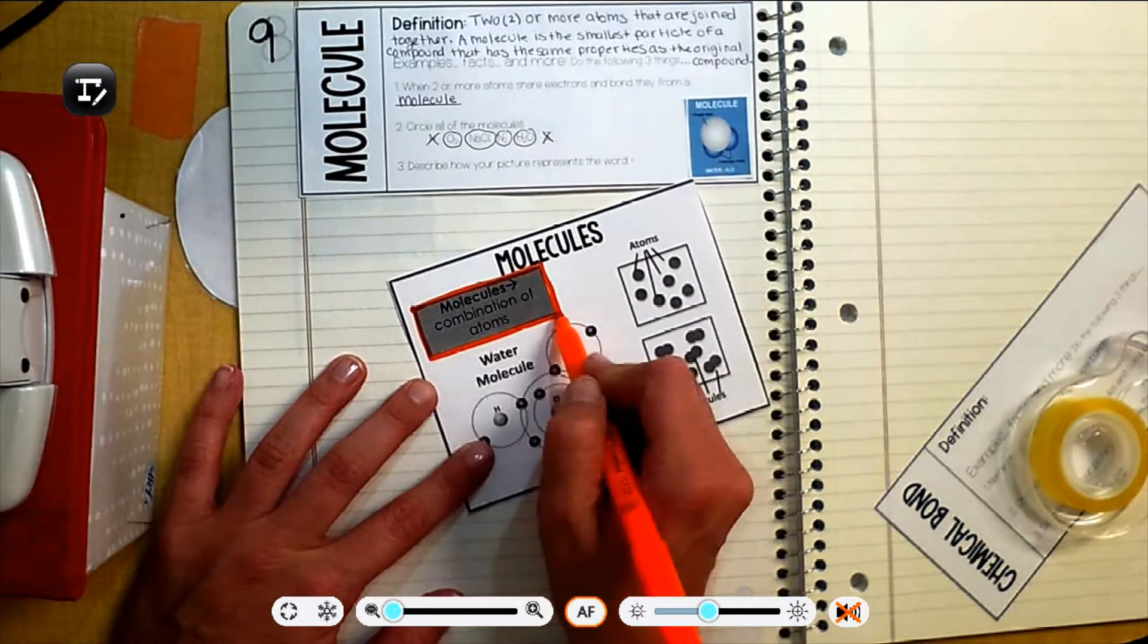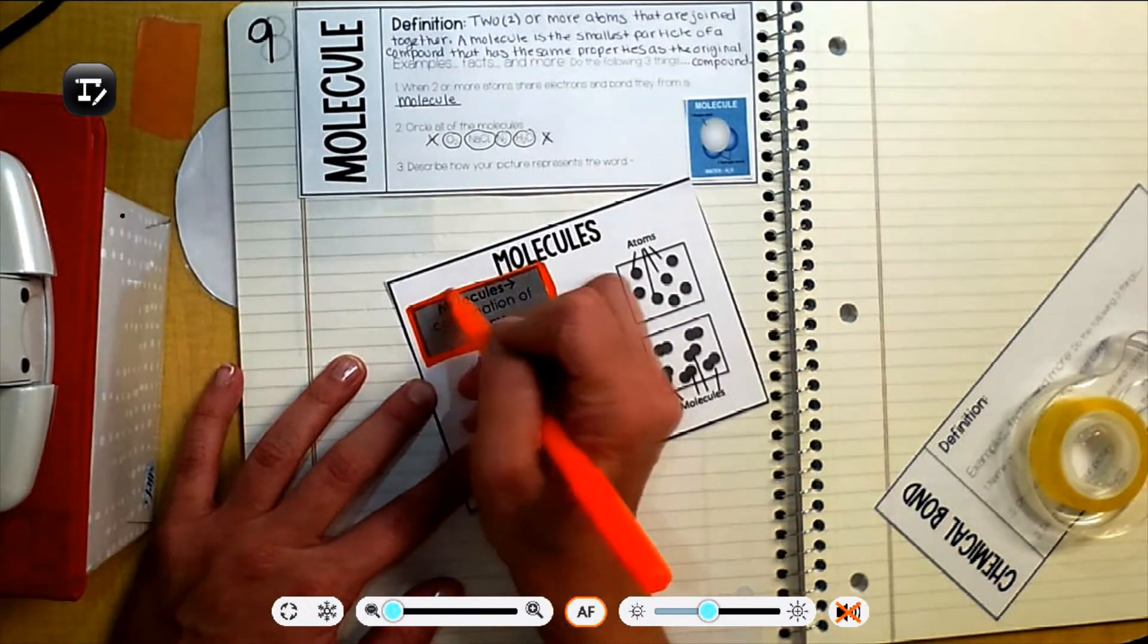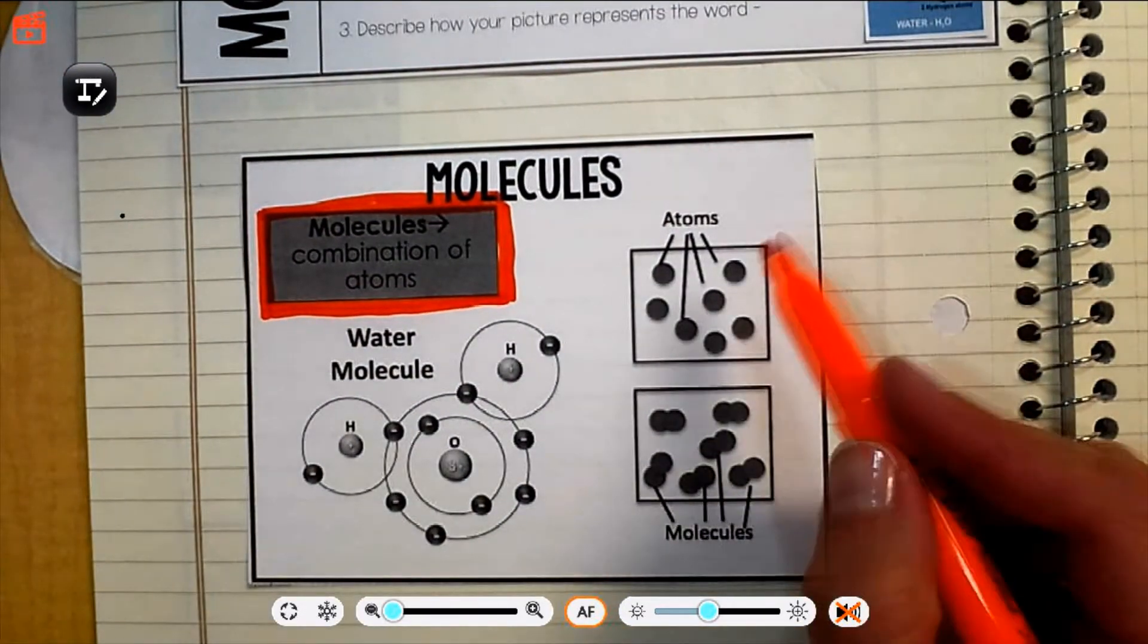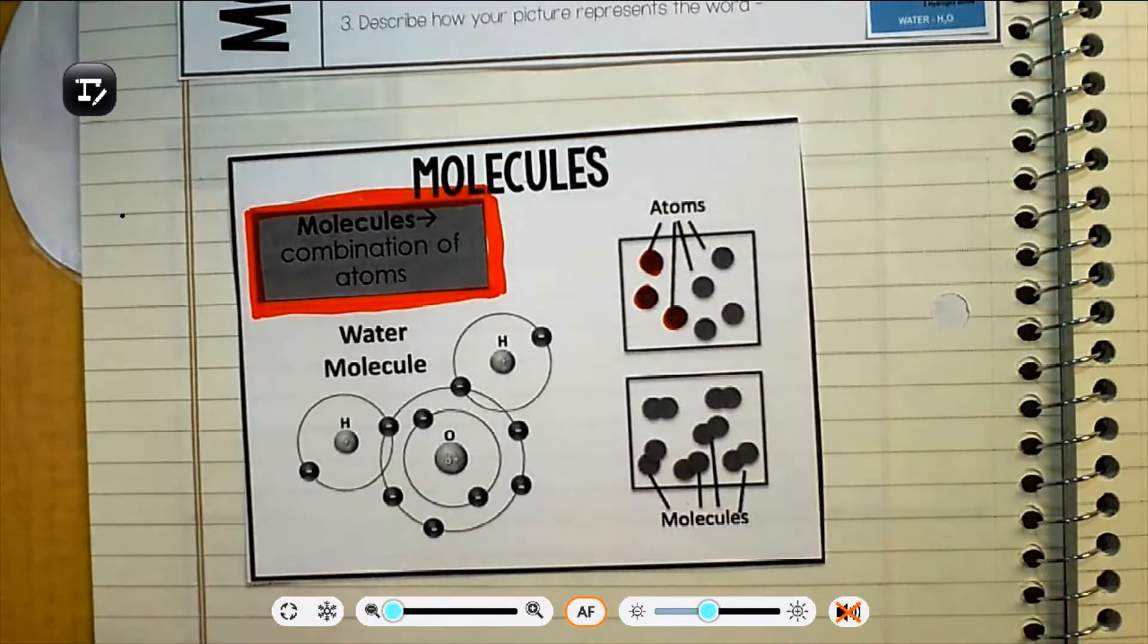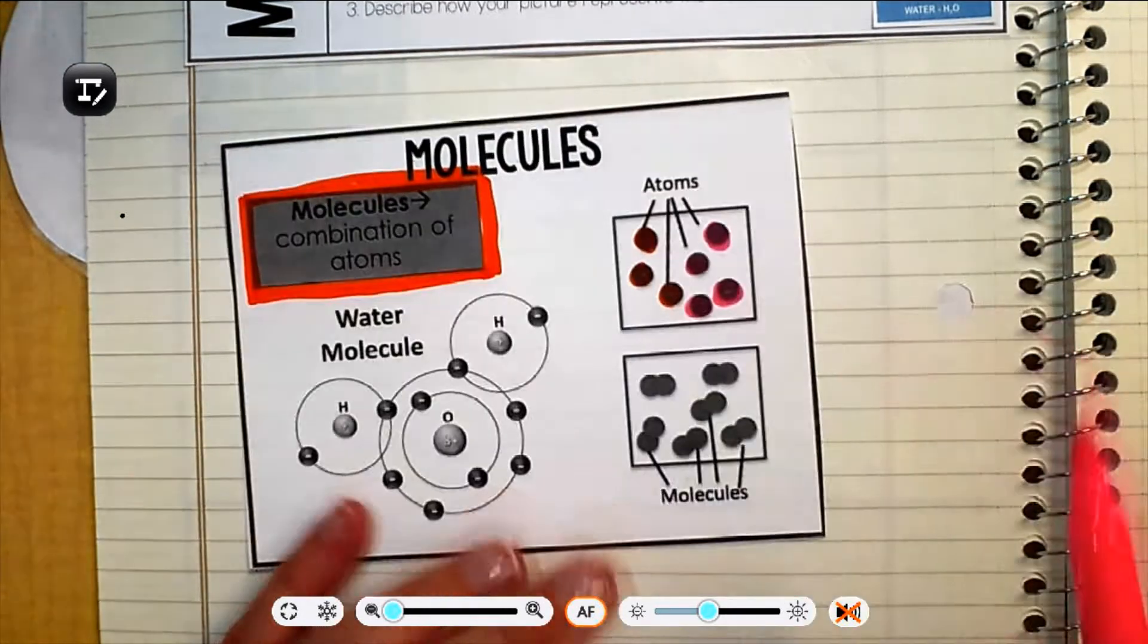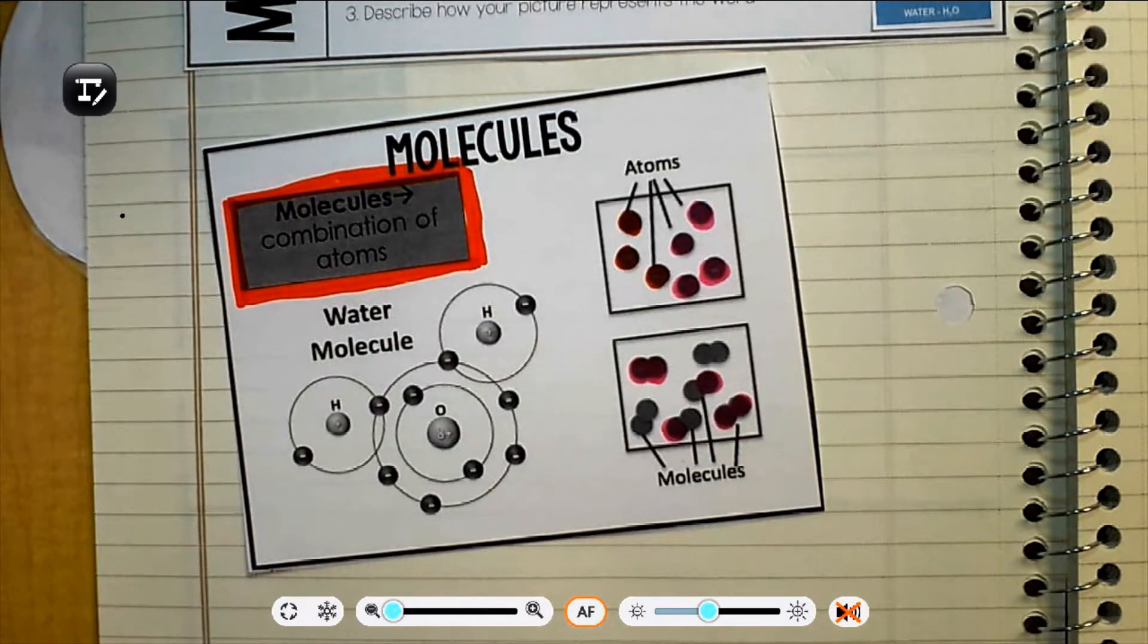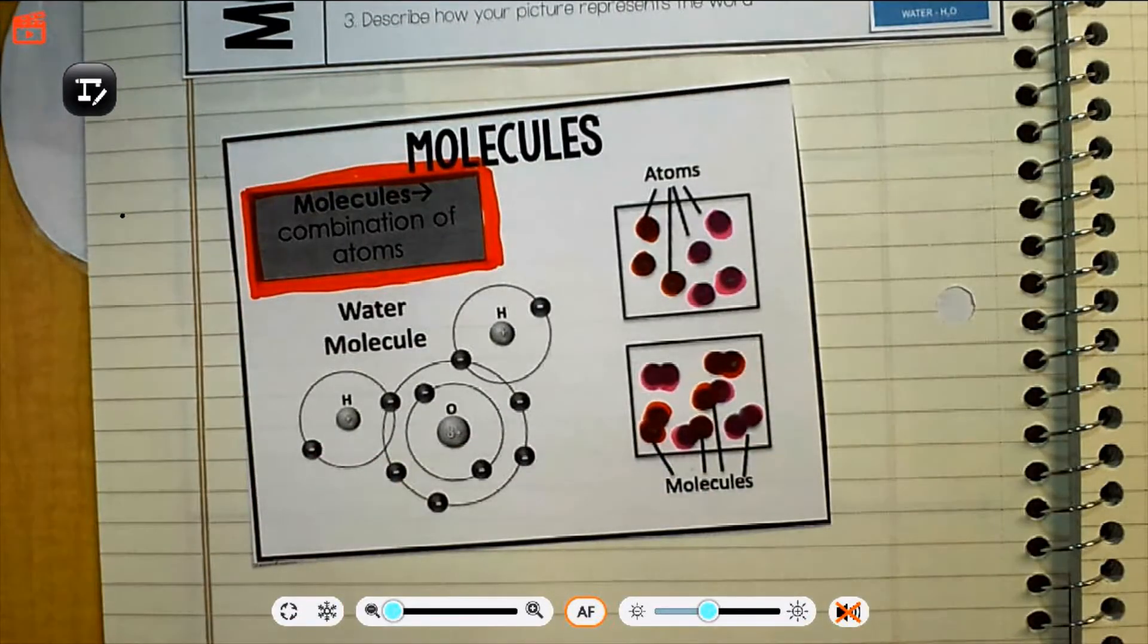So I want you to highlight this big part right here because this is the most important part. Molecules are combinations of atoms. So any combination of atoms. A molecule has to have more than one atom. So here, if you look over here, atoms hanging out by themselves. So these are like just atoms. Let's get a different color, too. Atoms. But these are molecules. They have two of them together.